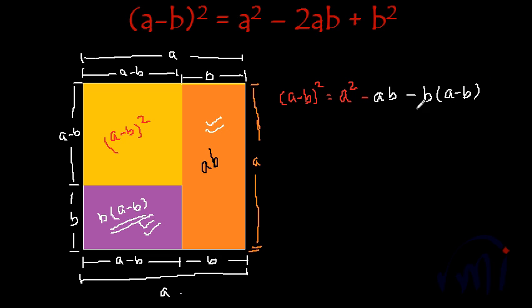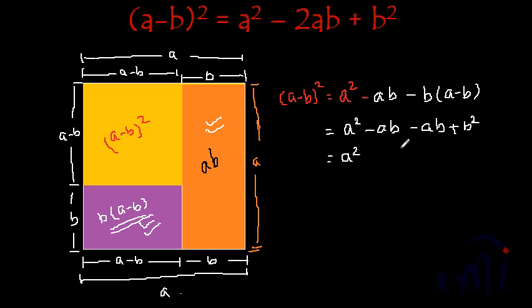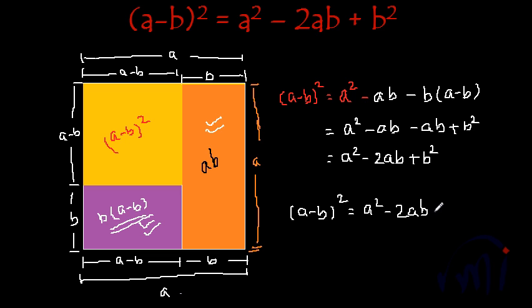And then we have to subtract this area also, that is minus b multiplied by a minus b. To simplify this, let me open this bracket and multiply minus b inside. So we get a square as it is, minus ab as it is, and minus b multiplied by a gives minus ab, and minus b multiplied by minus b gives plus b square. So this simplifies to a square minus 2ab plus b square. And this is the formula of a minus b whole square: a minus b whole square equals a square minus 2ab plus b square. This is the geometrical representation of a minus b whole square.